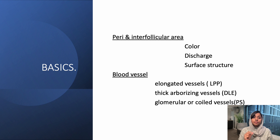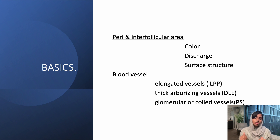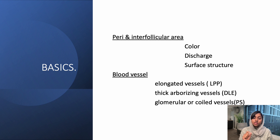The next structure is the blood vessels. Different blood vessels indicate different pathological conditions. For example, elongated vessels are seen in lichen planopilaris. Thick arborizing vessels are seen in discoid lupus erythematosus. Glomerular or coiled vessels are seen in psoriasis.